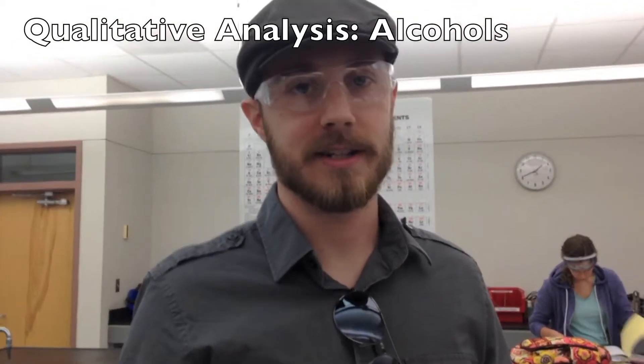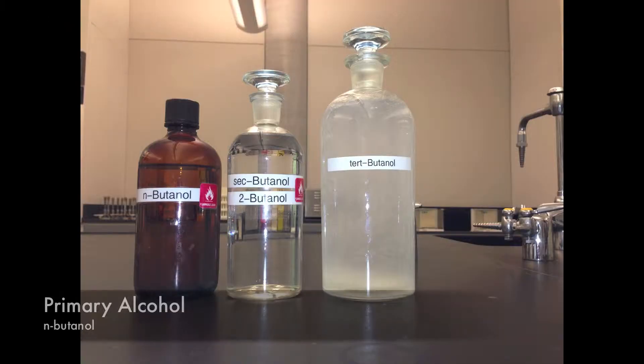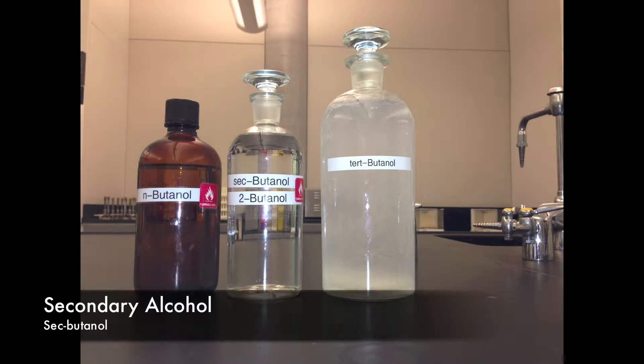What we'll be showing you today is how to differentiate between three different types of alcohols. Our primary alcohol, which will be n-butanol, a secondary alcohol, which will be sec-butanol, and a tertiary alcohol, which will be tert-butanol.